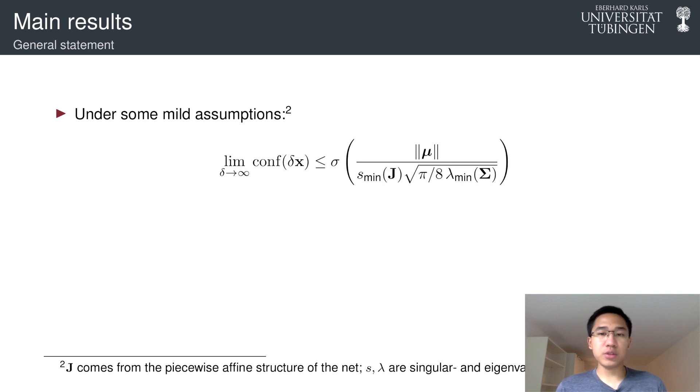And now we have a new term here that depends on our Gaussian approximation, which is the minimum eigenvalue of the covariance matrix. And as we can see here, as the minimum eigenvalue of the distribution gets larger, then the confidence in the limit will go lower. That means that as we have more uncertainty in our Gaussian approximation, the confidence will be lower in the limit.